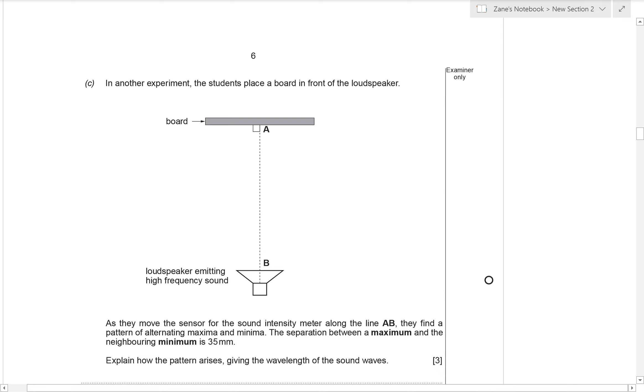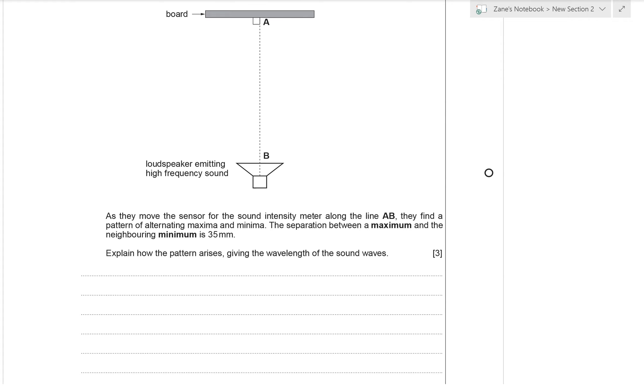In the final part of the question the students set up a different experiment where they send sound waves towards a board and they detect a pattern of alternating maxima and minima as they move their sound sensor in between A and B. The key to this question is to realise that what they've done is set up a standing wave because they've got two identical waves travelling through each other in opposite directions. So a standing wave is produced by the superposition of the original sound and the reflected sound.